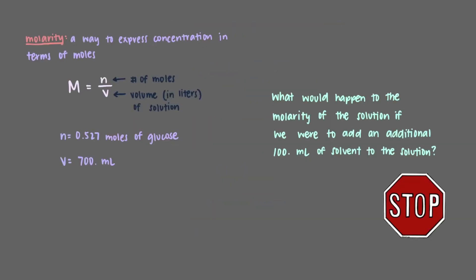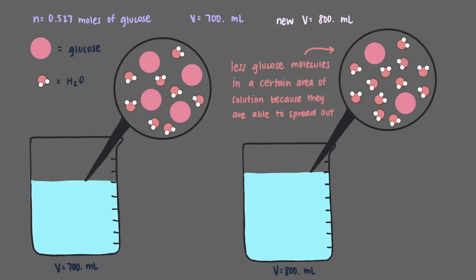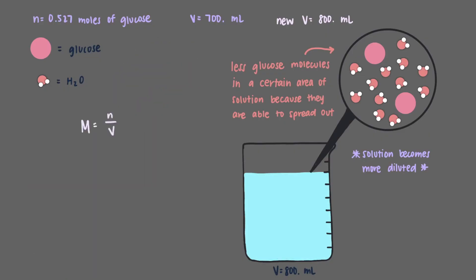What would happen to the molarity of the solution if we were to add an additional 100 mL of solvent to the solution? To increase the total volume, we just added solvent to our solution. That means that the number of moles of glucose stayed the same. This means that there are fewer glucose molecules in a certain area of the solution. They are able to spread out more in the solution. This means that the solution becomes more diluted. If we were to look at this mathematically, we see that the only part of our molarity equation that changes is the denominator. It increases. An increase in the denominator causes molarity to decrease.